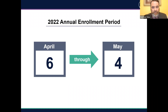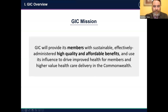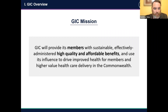Now we'll move into a brief overview of the GIC to give you a high-level understanding of what we do. We start with the GIC's mission, which is to provide its members high quality and affordable benefits while driving improved health for members and higher value care delivery across the Commonwealth. Members and high quality affordable benefits are bolded here because they are front and center of how we operate and what we're focused on.